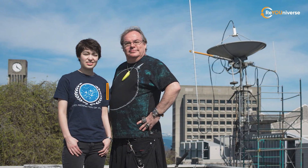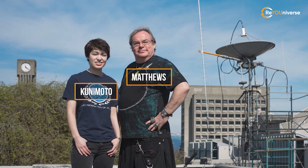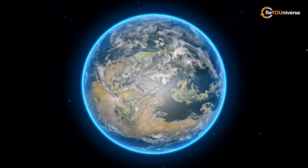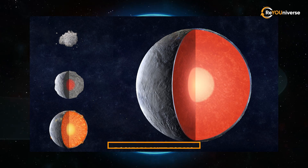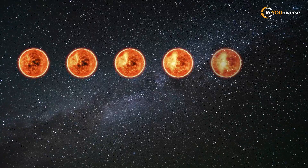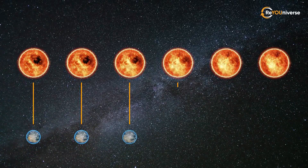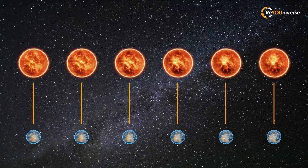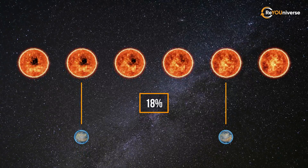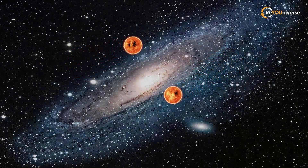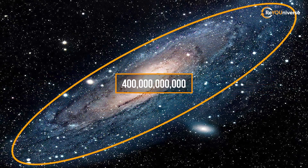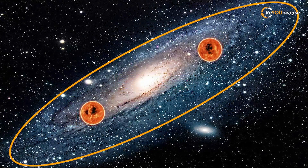A more precise study published by Kunimoto and Matthews in February 2020 suggests there are around 6 billion Earth-like planets in the Milky Way. By Earth-like, the researchers mean rocky planets roughly the same size as Earth orbiting a Sun-like star. According to their calculation, the upper limit of Earth-like planets per Sun-like, or G-type, star is 0.18, meaning only 18% of G-stars have an Earth-like planet. Considering that G-stars constitute 7% of all stars in the Milky Way and there are 400 billion stars, scientists arrived at the number of 6 billion.